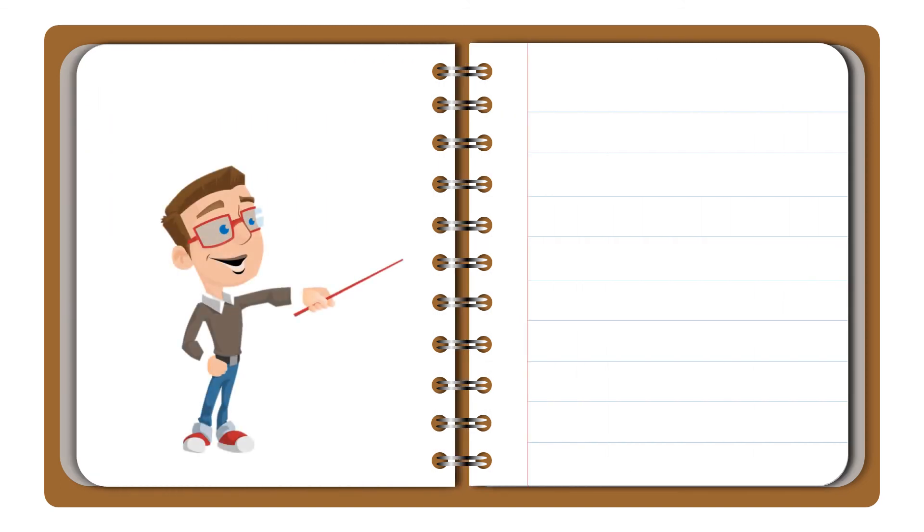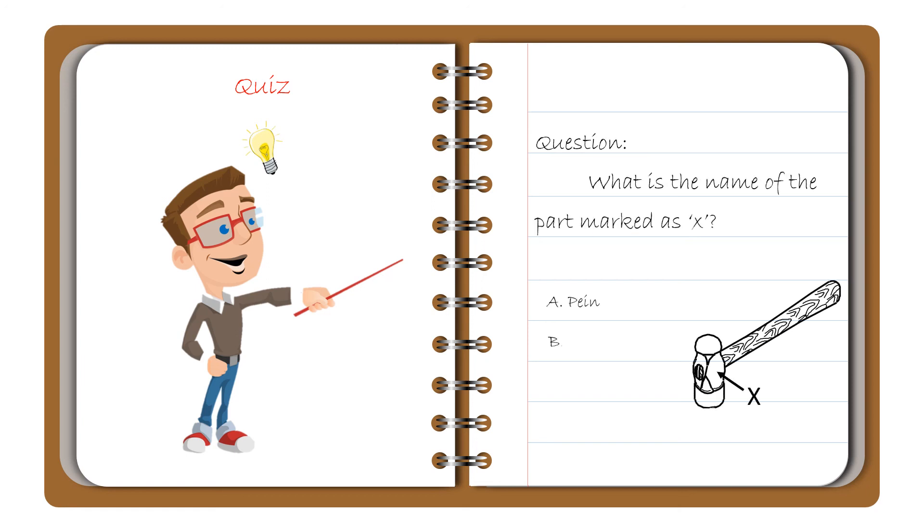For the remembrance of this topic, we are going for a quiz. The question is: What is the name of the part marked as x? A. Pain. B. Cheek. C. Face. D. Eye hole.